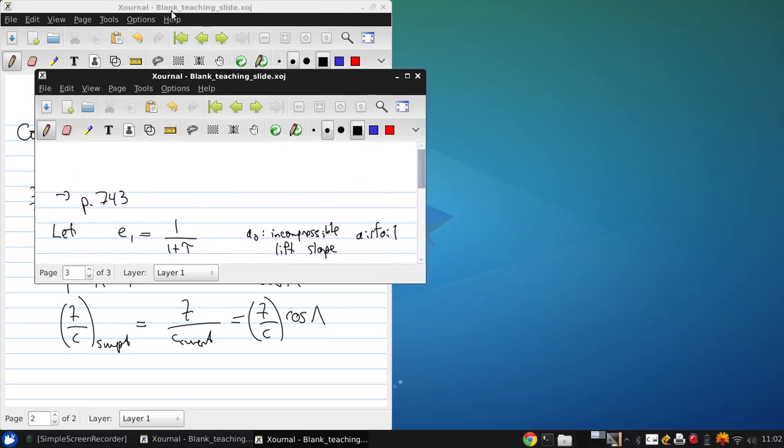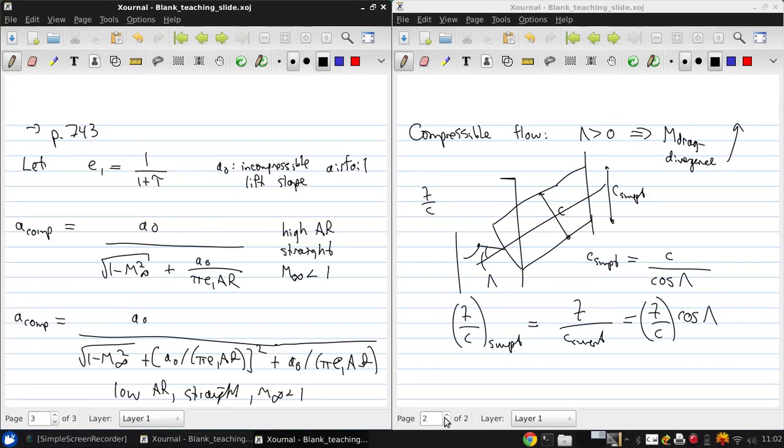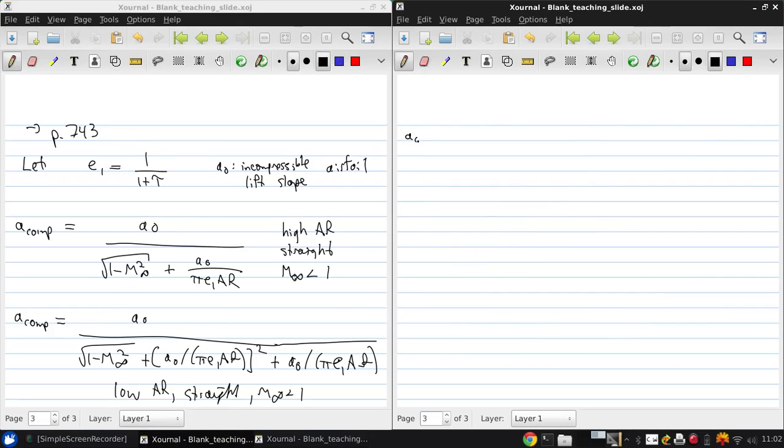And finally for a swept wing compressible flow, we combine previous results. And now we see there's an extra effect that the freestream Mach number is essentially reduced by the sweep angle. And further, the same lift slope effect as before.